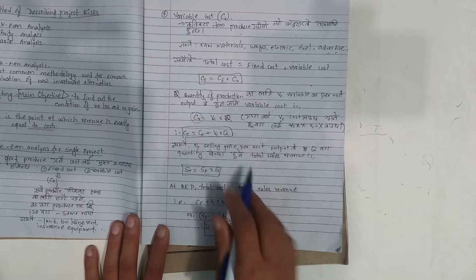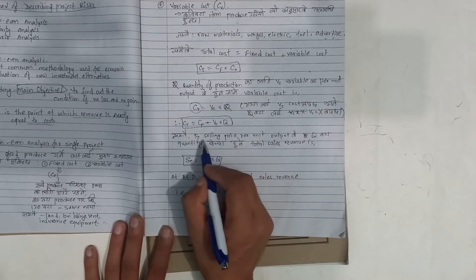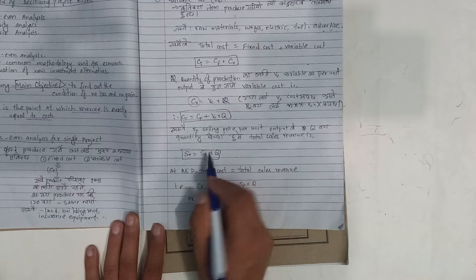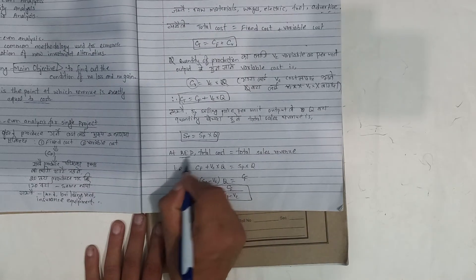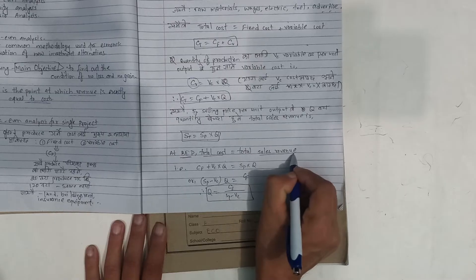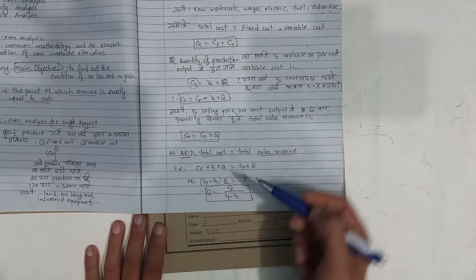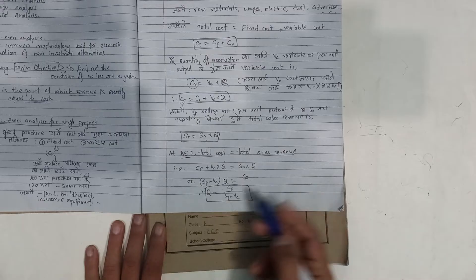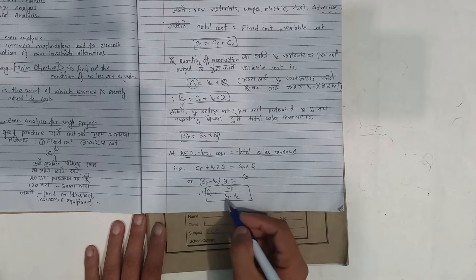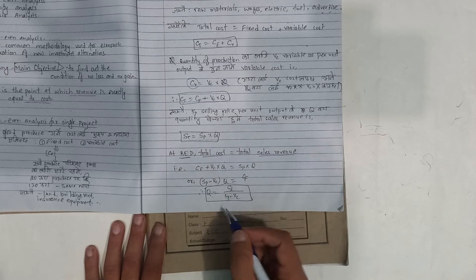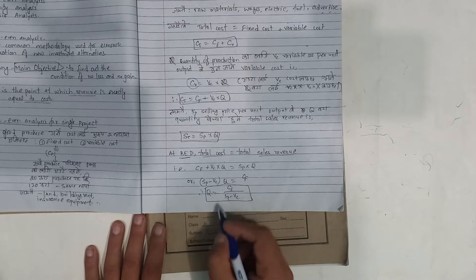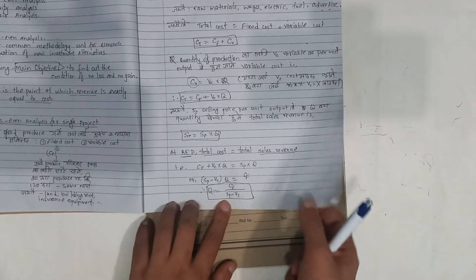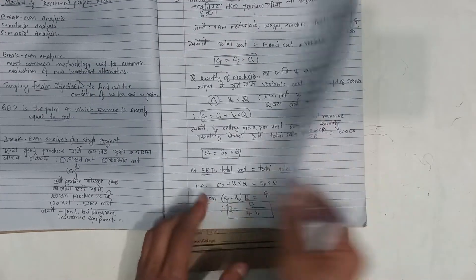The formula is: Total Cost = CF + BC × Q, where CF is fixed cost, ESP is the selling price per unit, and BC is the variable cost per unit. At break-even, revenue equals total cost. Solving for Q, the break-even quantity is Q = CF / (ESP − BC).